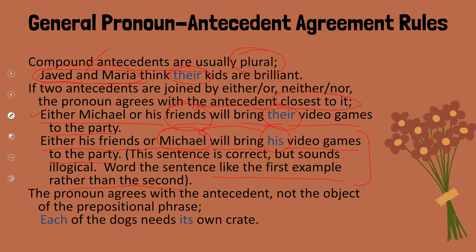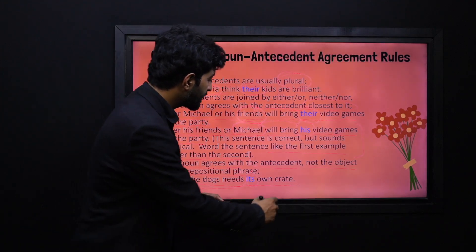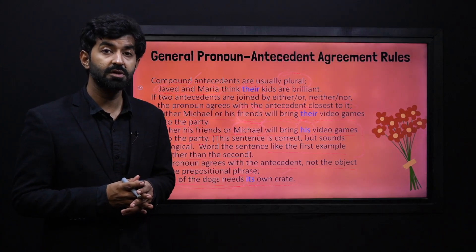The pronoun agrees with the antecedent, not the object of the prepositional phrase. For example: 'Each of the dogs needs its own crate.' When we use 'each,' since it is singular, we treat it as singular. So, we use the pronoun antecedent 'its' because we are dealing with a singular subject. The object here is 'crate.' These are some important rules.